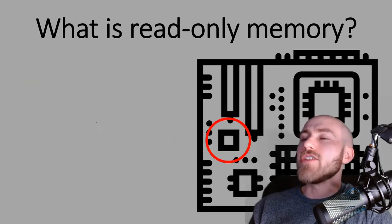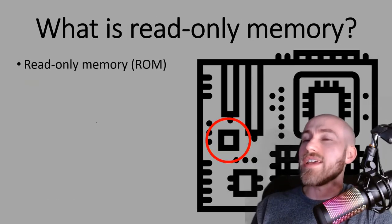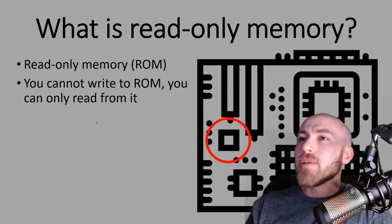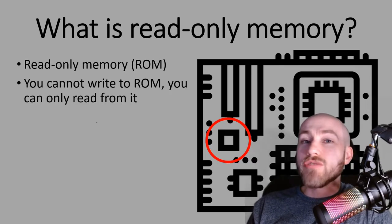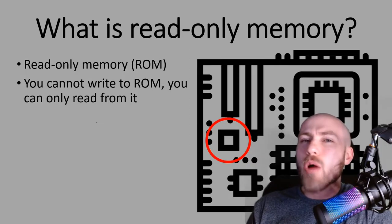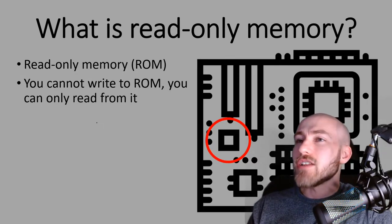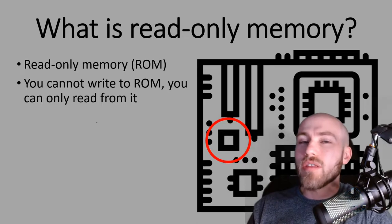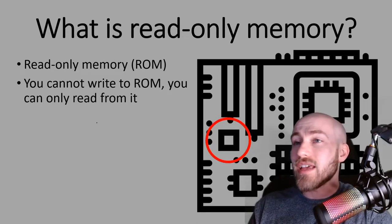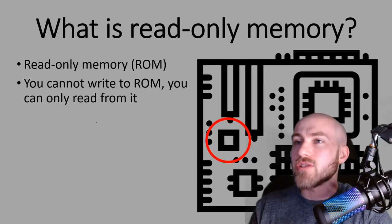Now let's have a look at another type of memory. The next one is read-only memory, or ROM. You've probably heard the terminology read-only before — it's usually shown when you open a Word document on Teams or something like that. Sometimes it appears as read-only, and it quite literally means that you can only read from it; you can't write to it at all.